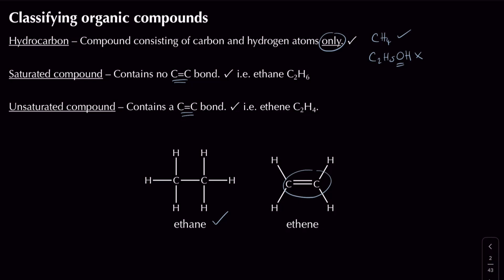All of our alkenes — for example ethene, which has a carbon-carbon double bond — we say they're unsaturated. Another example that comes up, even though it's not strictly on the spec, is alkynes. Alkynes have carbon-carbon triple bonds, and we can also classify these as unsaturated. An example is ethyne itself.